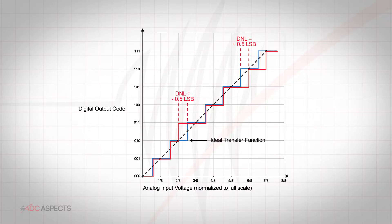This can be observed on the ADC transfer function as uneven spacing of the code steps. The presented figure shows areas where the DNL error is negative half LSB and positive half LSB.